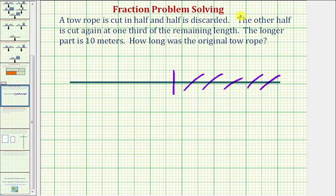The other half is cut again at one third of the remaining length. So let's mark off this half into thirds. We'll mark it off here and here, and again it says it's cut at one third of the remaining length. So let's say it's cut off here.